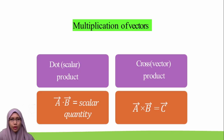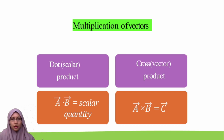Vectors can be added, subtracted, and also multiplied. We have two types of multiplication for vectors: scalar product, also known as dot product, and cross product.